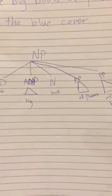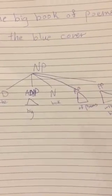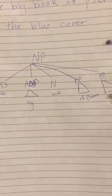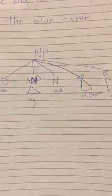It looks literally flat — all daughters have branches extending from the mother, connected as a unit. We can't say that 'book of poems' can function as a constituent without the determiner 'the' and without the adjective 'big.' You cannot leave these alone; they have to be together.